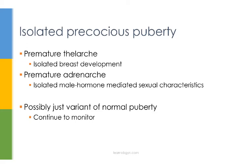The final kind of precocious puberty is isolated precocious puberty. This includes premature thelarche and premature adrenarche. With premature thelarche, you have isolated early breast development, and with premature adrenarche, you have isolated early development of male hormone-mediated sexual characteristics such as pubic and axillary hair or acne. Isolated precocious puberty can just be a variant of normal puberty; however, these patients should be monitored in case they develop full-blown precocious puberty.